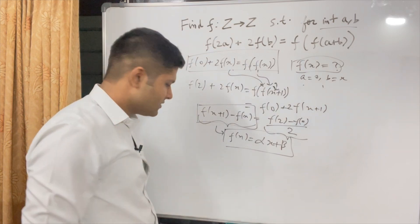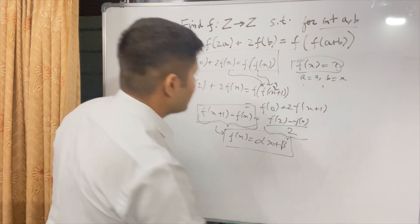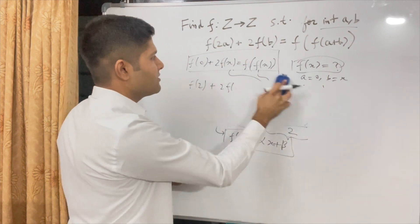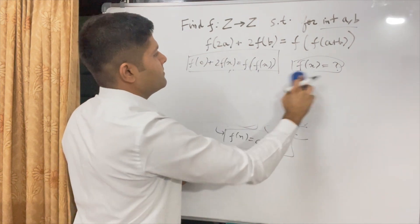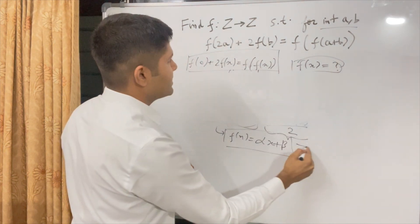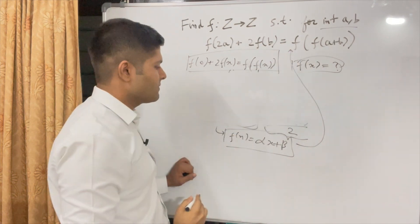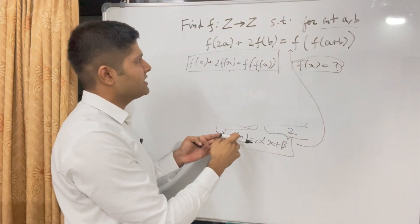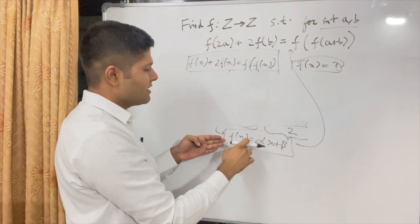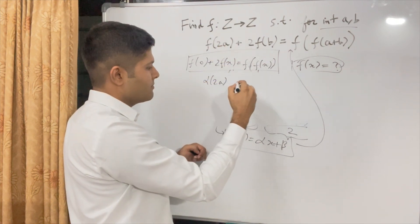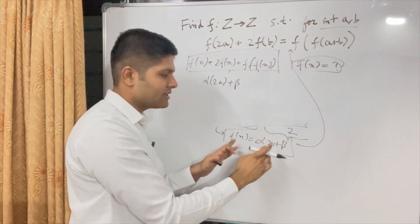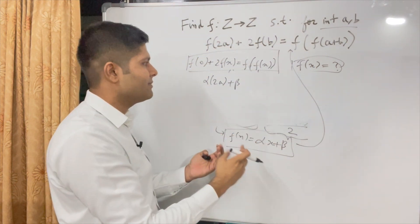So we know this much. So now what is the value of this α and β? That is what we are supposed to find. So I'll rub this off now. So why don't we insert this value into this function? So what is f(2a)? So f(2a) is α times 2a + β. We are just putting 2a as the value of x here. This much we have concluded. Now we are trying to find α and β.